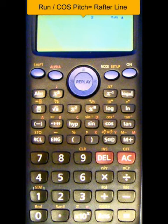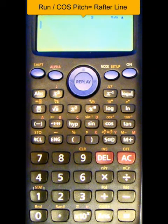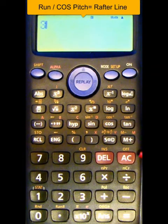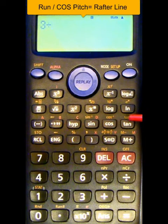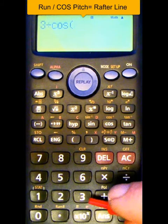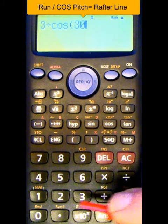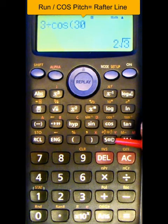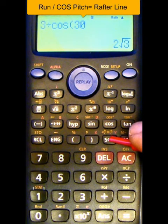In this example, we'll take an example of a run being three. You've hit in three, hit divide, hit the cos button, and whatever the pitch of the roof, tap it in. In this case we'll just go 30 and hit equals.